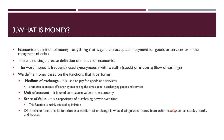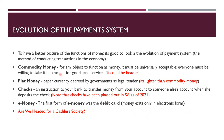Of the three functions, money as a medium of exchange is what distinguishes it from other assets such as stocks, bonds, and houses. All of these are assets, but we cannot use houses to make purchases — they are not generally accepted as a means of payment. You can use bonds or houses to store wealth, but it is the medium of exchange function that uniquely distinguishes money from all other assets, because it is accepted generally by everyone in settling payments.